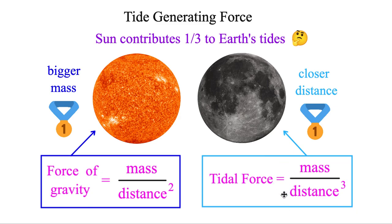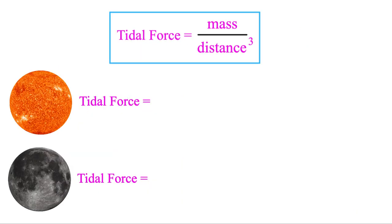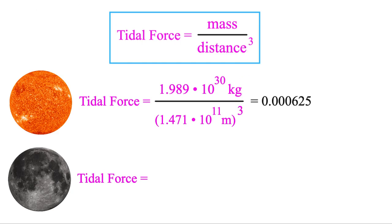But let's go ahead and plug into this equation for the Sun and the Moon. Starting with the Sun, we'll go ahead and put its mass in kilograms up top, divided by its current distance from Earth in meters. And we're going to cube that since it's in the bottom. And that'll give us this amount.